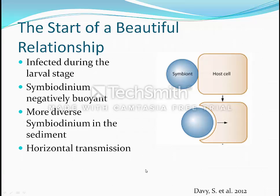Coral larvae have the capacity of obtaining Symbiodinium before they settle as juveniles. The corals in their larval stage have phagocytic cells that are able to capture free-living Symbiodinium. There is a higher diversity and density of Symbiodinium in the sediments of reef systems due to the negative buoyancy of Symbiodinium. The larvae have been shown to travel to the sediment and have a higher chance of getting the best-suited algae for the job. Having an array of Symbiodinium initially can give them a competitive advantage for the environment they live in.